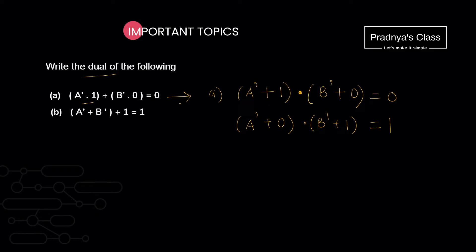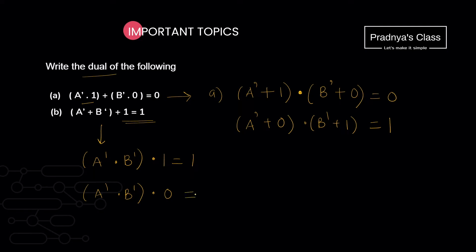Now let's solve the second one. In bracket we have A-complement. OR operator will get replaced with AND, then B-complement. We can see one more OR operator that will get replaced with AND; 1 equals to 1. In the next step we take care of 0s and 1s. So A-complement dot B-complement will remain as is, followed by dot — 1 will get replaced with 0. This 1 also will get replaced with 0. In this way, we got the dual for this question too.